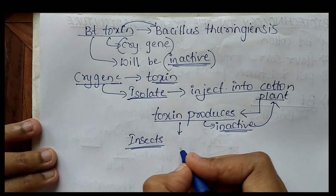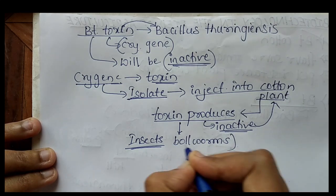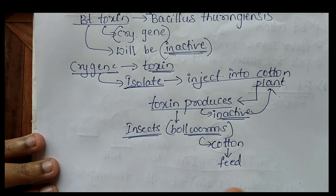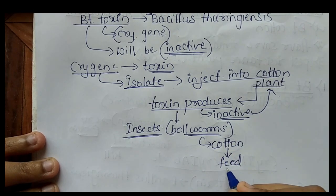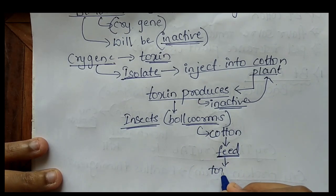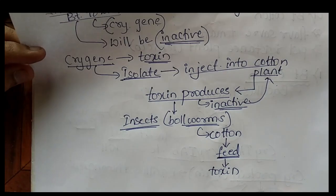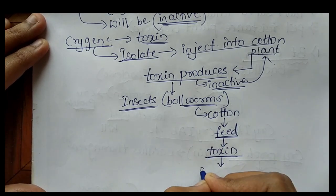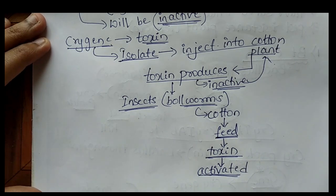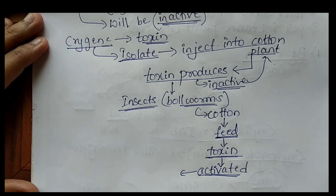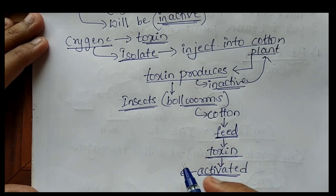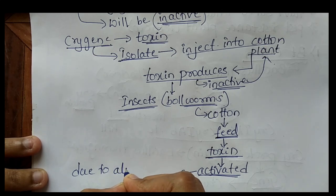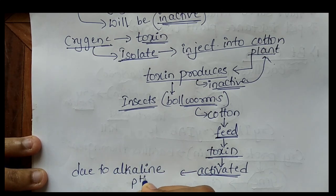If insects such as bollworm feed on the cotton plant and interact with the plant, the toxin interacts with the insect body. As the insect eats the cotton plant, the toxin enters the insect body and gets activated due to the alkaline pH present in the midgut region of the insect.